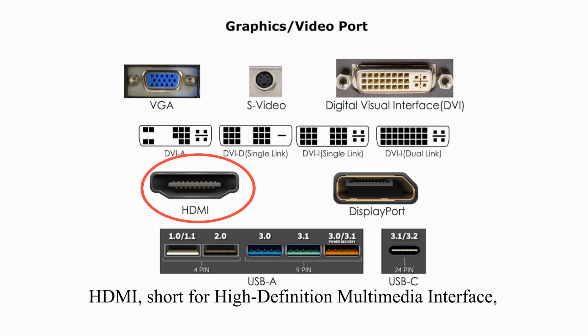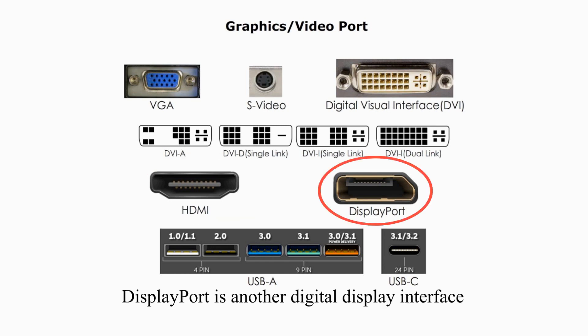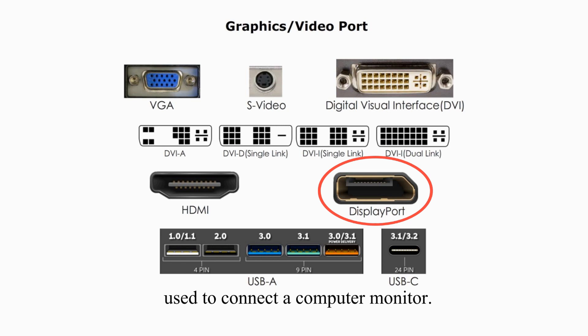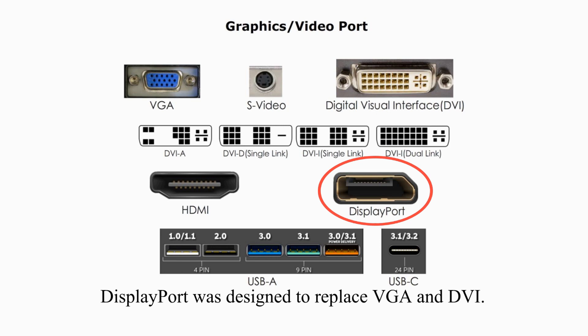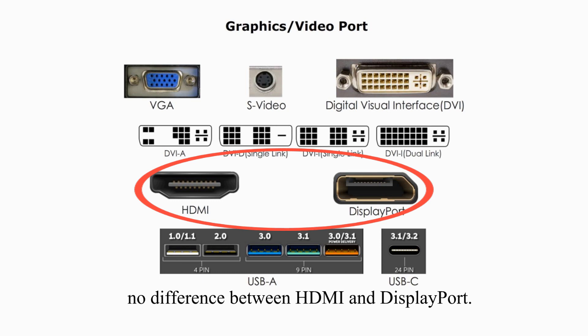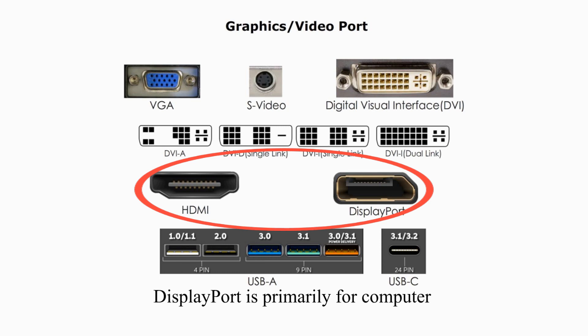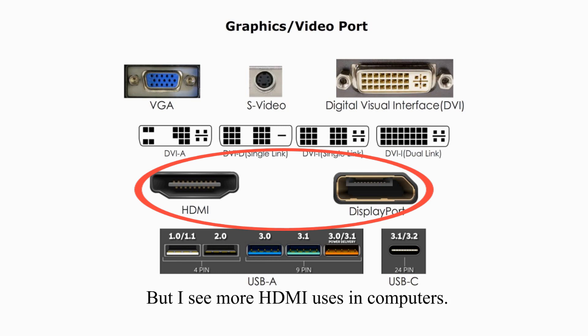HDMI, short for High Definition Multimedia Interface, is a digital audio-video interface that is quite popular nowadays. DisplayPort is another digital display interface used to connect computer monitors. DisplayPort was designed to replace VGA and DVI. In terms of image quality, there's virtually no difference between HDMI and DisplayPort. HDMI is used mainly for consumer electronics, while DisplayPort is primarily for computer and periphery video connections, though HDMI is increasingly common in computers.